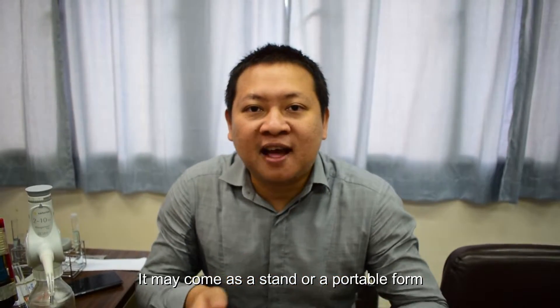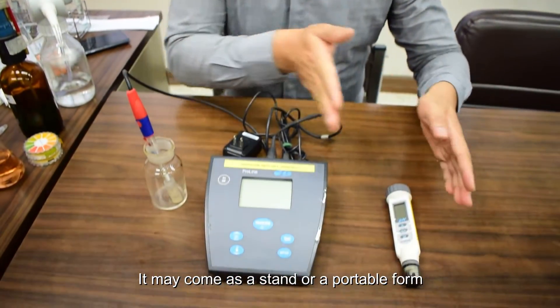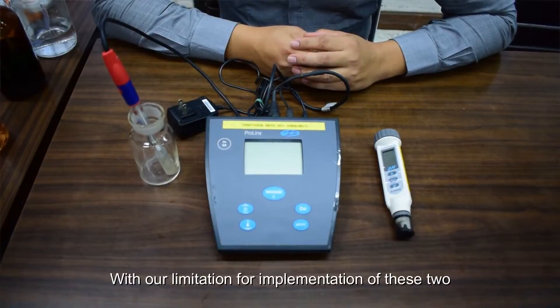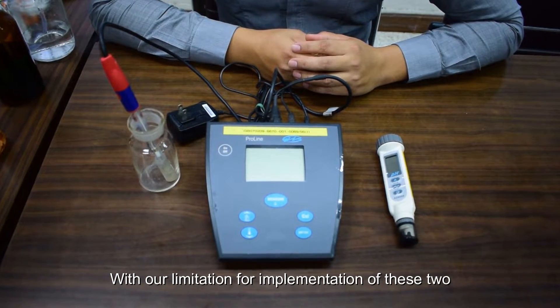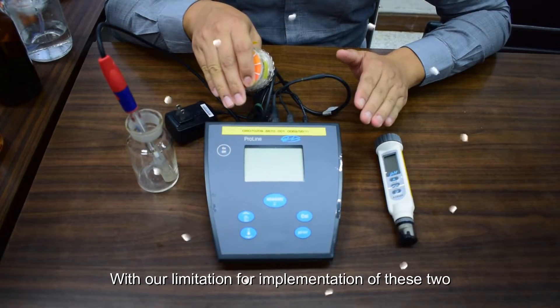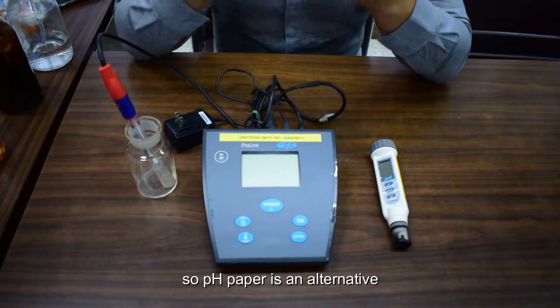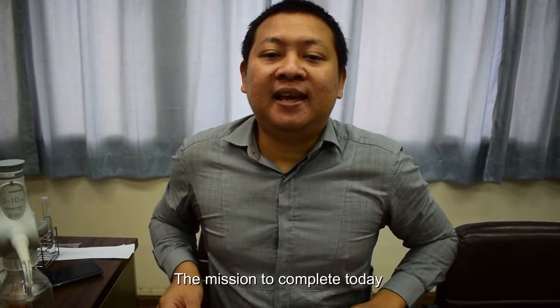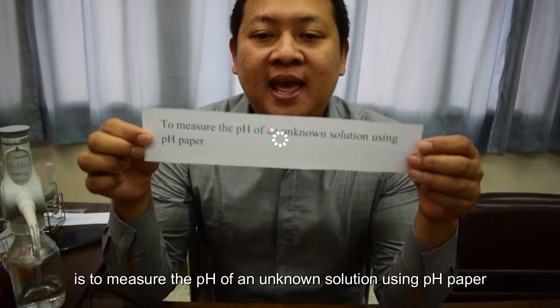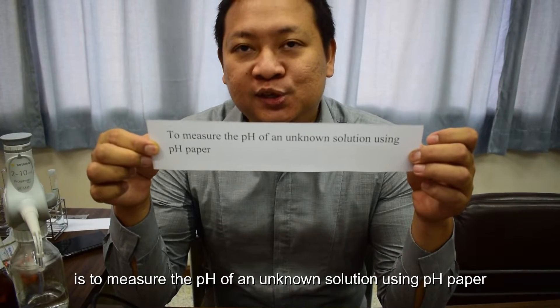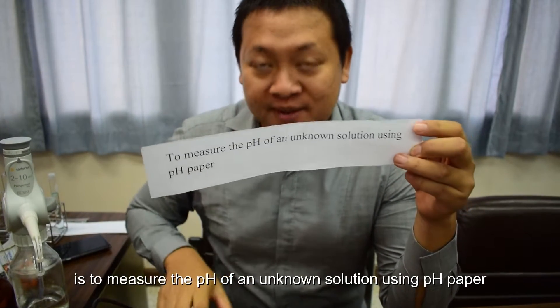It may come as a stand or a portable form. Without limitations for implementation of these two formats, pH paper is an alternative. So the mission to complete today is to measure the pH of an unknown solution using pH paper.